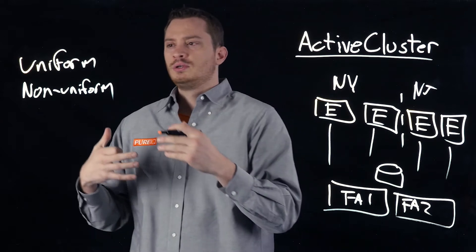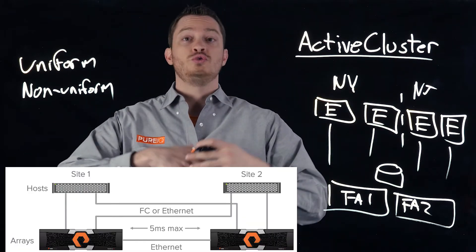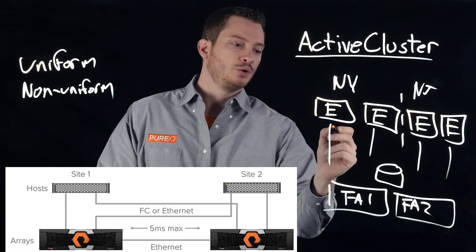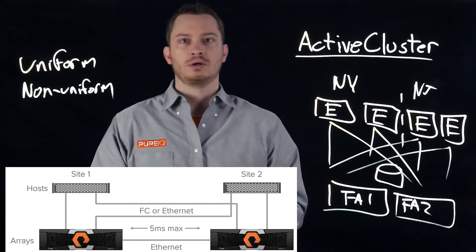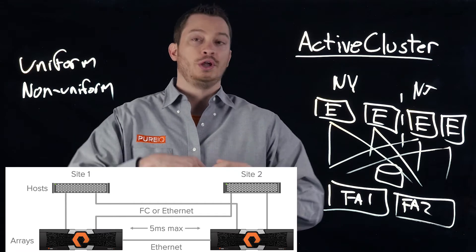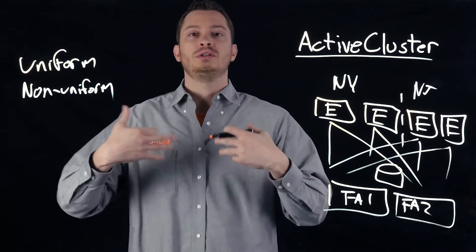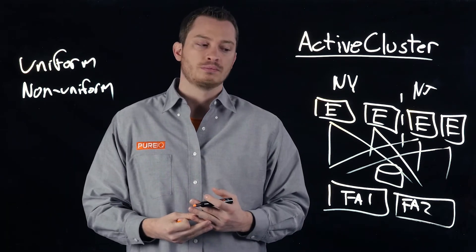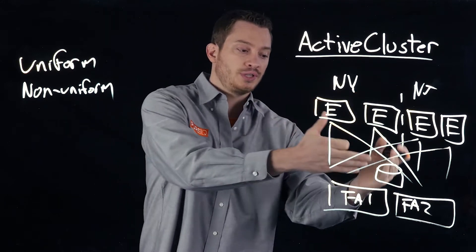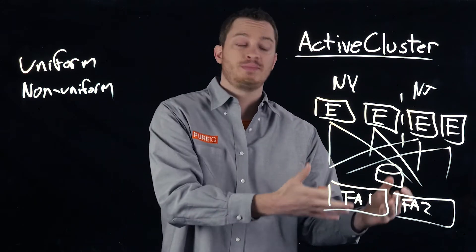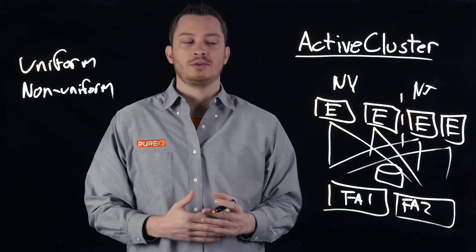The other concept is uniform. Uniform means that all hosts have access to both arrays — they are cross-connected across the network. This provides an additional level of resiliency. If one site were to lose their array and lose paths to that volume, they have surviving paths to the other array, so the VMs don't even have to be restarted on another host.